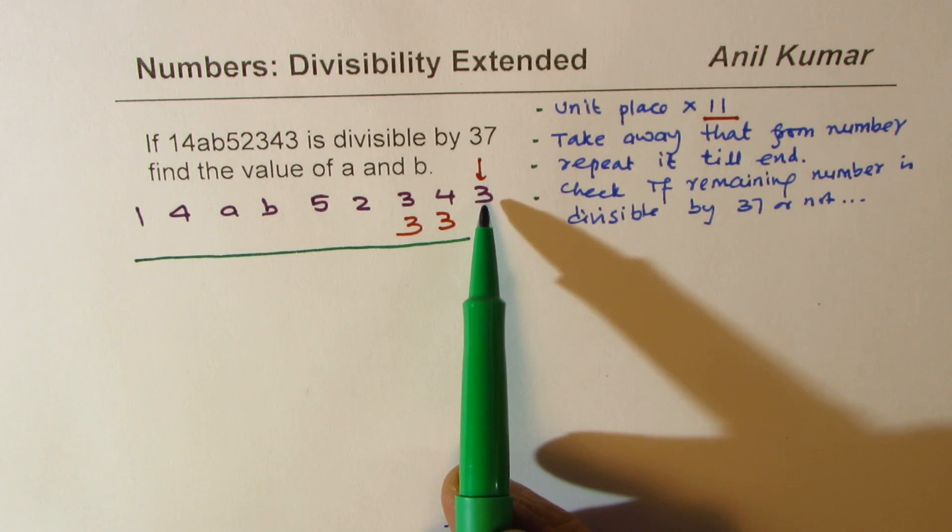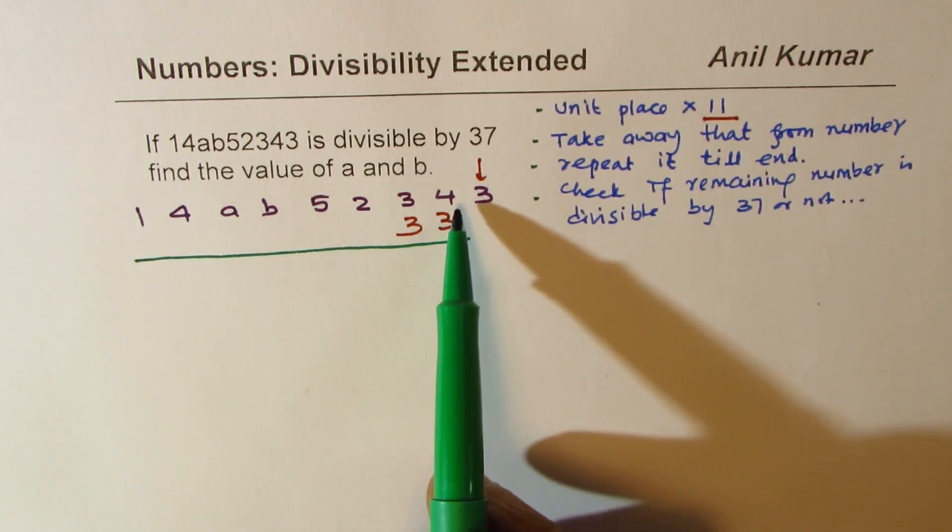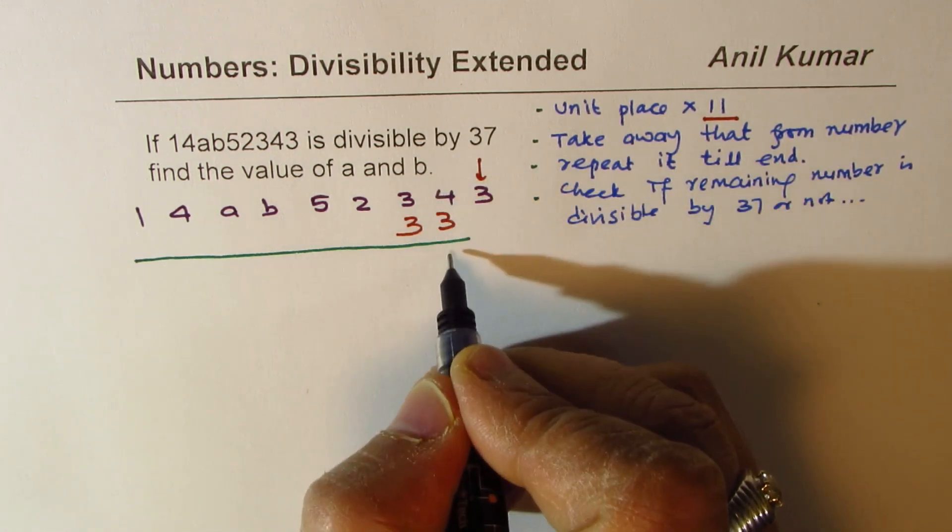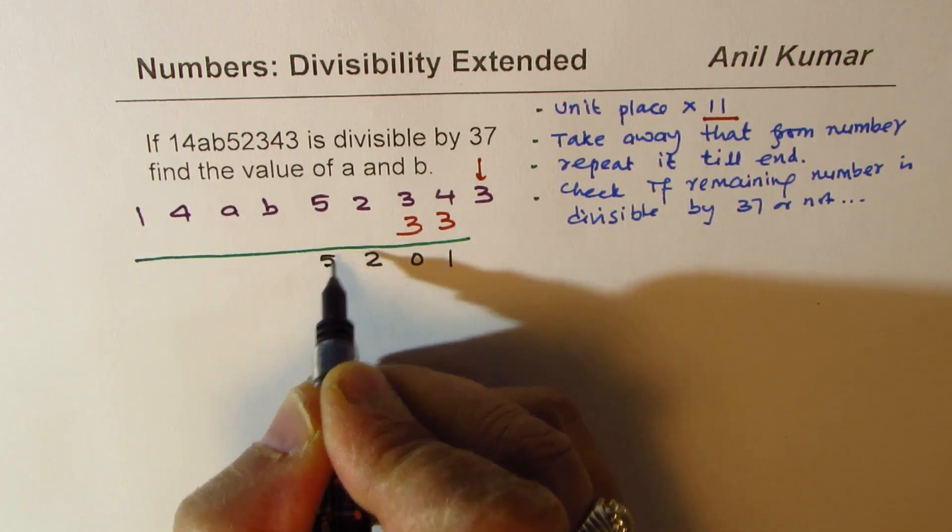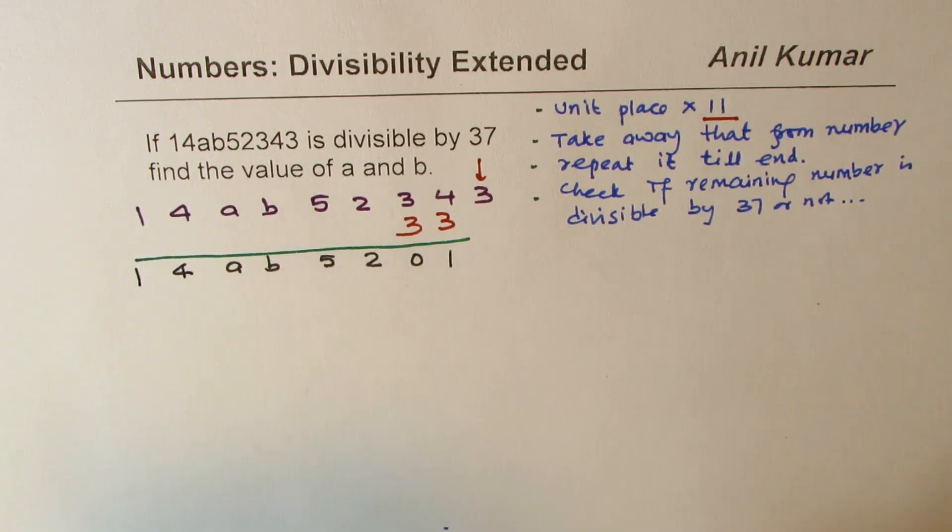So we times 3 by 11, we get 33. We'll take away 33 from the rest of the number. So when you take away, you get 1, 0, 2, 5, B, A, 4, and 1. You get the idea.